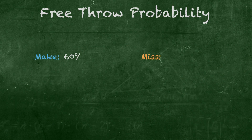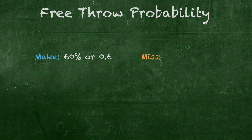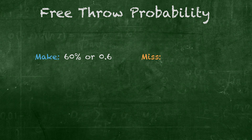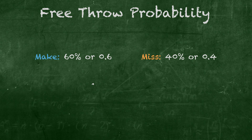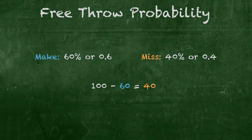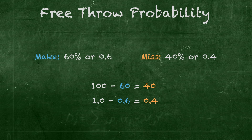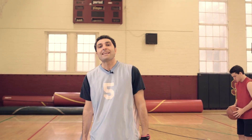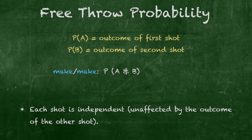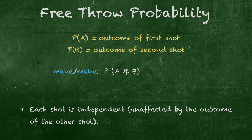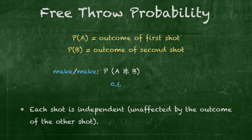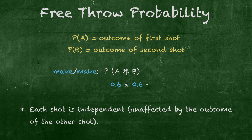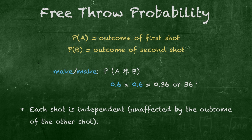If Jordan has a 60%, or 0.6, probability of making each shot, we can say that the probability of missing each shot is 40%, or 0.4, by subtracting 60% from 100%, or 0.6 from 1. Now, the most optimistic outcome Jordan can aim for is making both free throws. We can calculate this probability, represented as P of A and B, by multiplying 0.6 by 0.6 for a total of 0.36, or 36%.